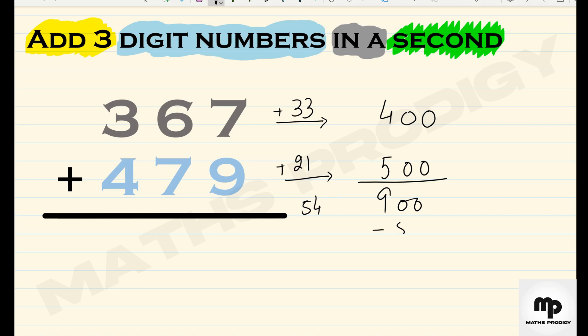Finally I have to subtract this 54. As you know, 900 minus 50 is 850, then minus 4. Again, the final answer is 846.